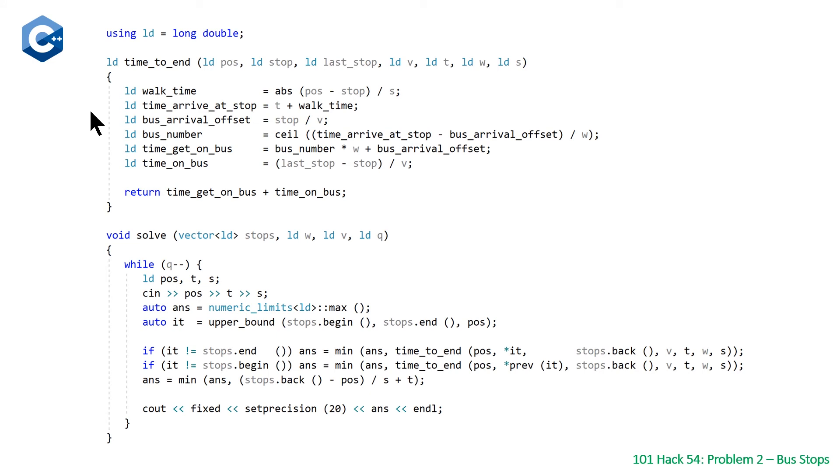So going up to our time_to_end function, we've broken this down into each of the components. The first component is the time to walk to the stop. The third component is the time on the bus. These are the simplest just as we stated in our visual example. And then the four values in the middle are used for calculating how much time there's going to be spent waiting at the bus stop.